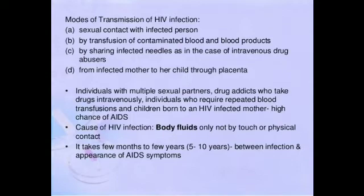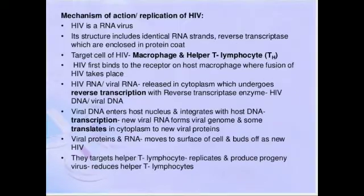HIV infection is transmitted through sexual contact with an infected person. It can also be transmitted by transfusion of contaminated blood — that's why before transfusion of blood it should be checked. Then, sharing infected needles and drugs, and from mother to the fetus through the placenta.